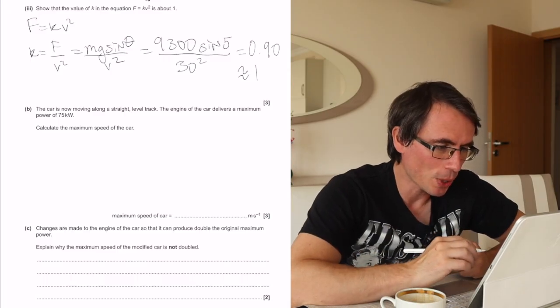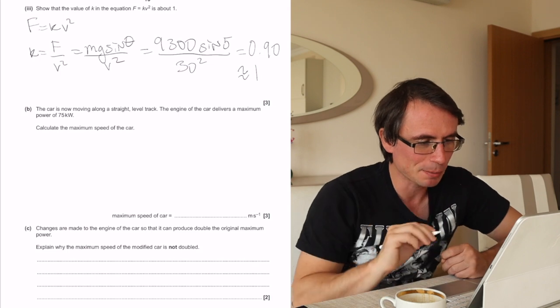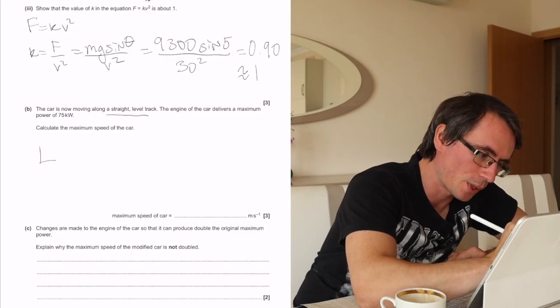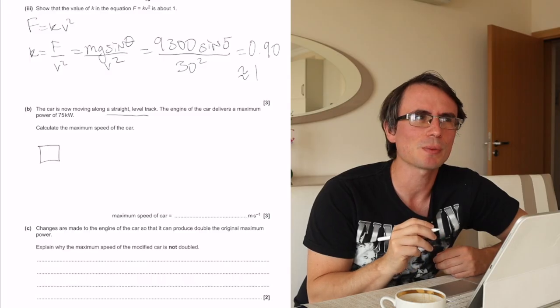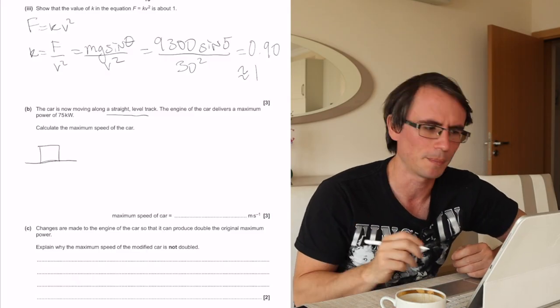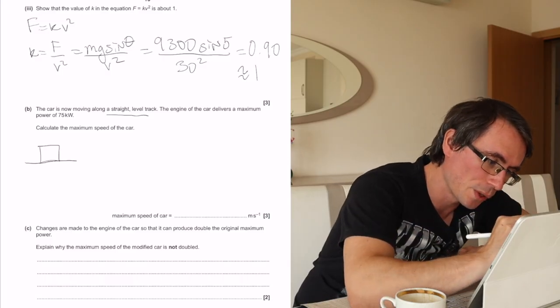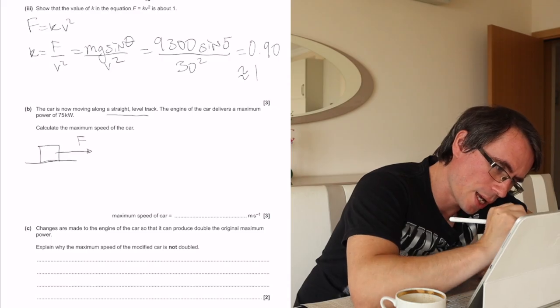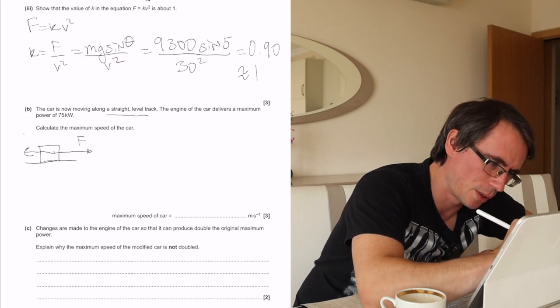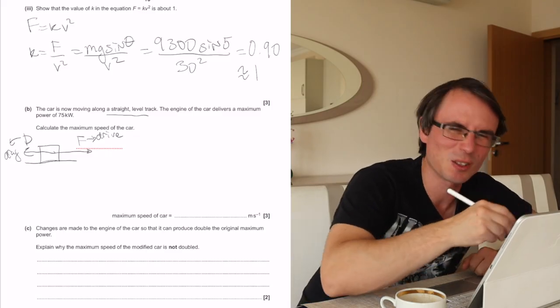Part B. The car is now moving along a straight level track. The engine of the car delivers a maximum power of 75 kilowatts. Calculate the maximum speed of the car. Now we are along a straight level track, and because the situation has changed, if I was to spend about 30 seconds just drawing a diagram, this is time really well spent because then you can really visualize the problem. There's going to be two forces acting. We are going to have some sort of a drive force. I'm just going to call this force F and then I'm going to call my drag force D. I know it's probably not a good idea to change what was given in the question, but it's the variables that I'm used with, so I'm just going to use those.